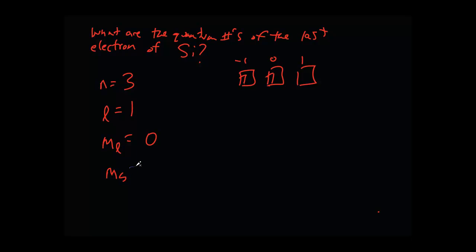And of course, since it's spin up, it's going to be plus 1 half. So the quantum number for silicon, or the last electron of silicon is 3, 1, 0, plus 1 half.